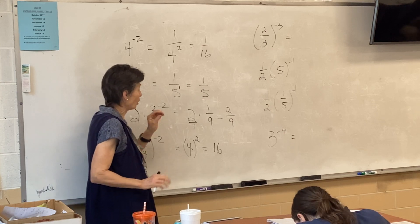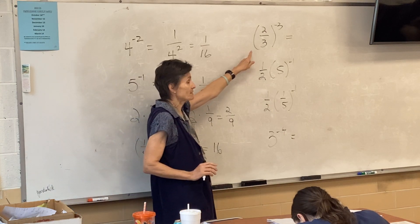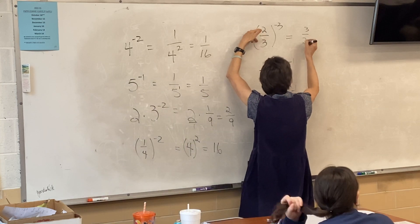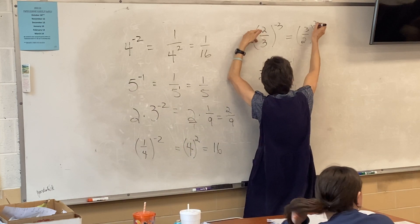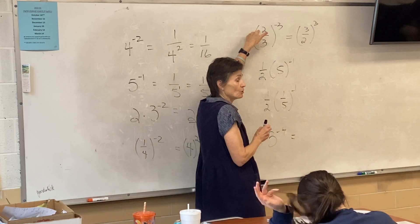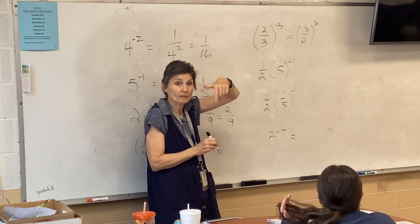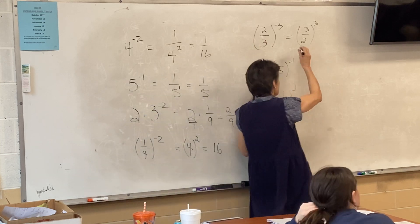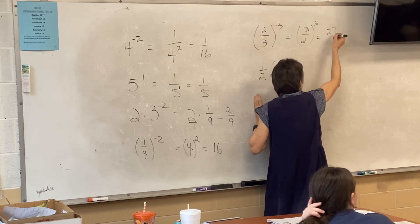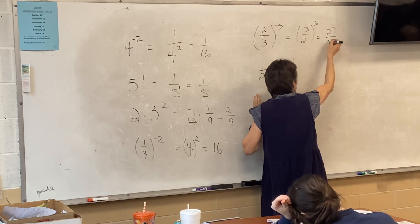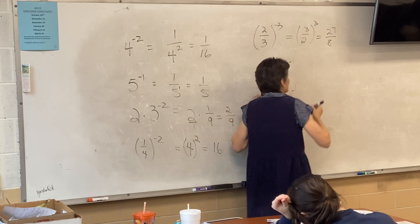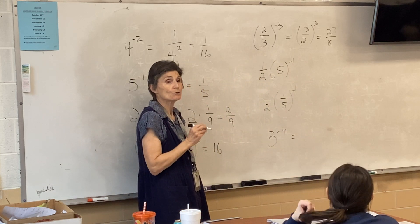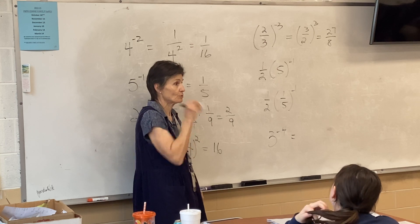Same idea — what happens to this one? It's going to flip to three over two, but it's still going to be cubed. When you flip it, the exponent goes to positive. So three cubed is 27 and two cubed is eight. That's our answer. Two cubed does not mean two times three — two cubed means two times two times two.